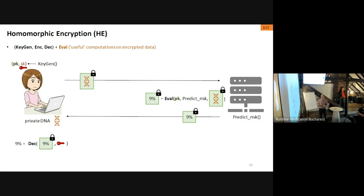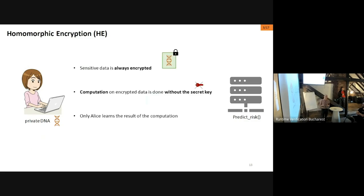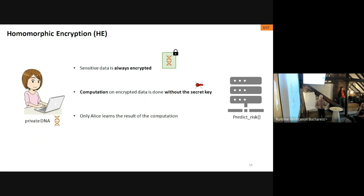The key points here are: Alice is always in control of her private data — once she encrypts her data and sends it out, she doesn't care because the data is always encrypted. Another important feature is that the computation is done without knowledge of the secret key, so the data is never decrypted during the computational process. Only Alice learns the result because she's the only one who has the secret key.